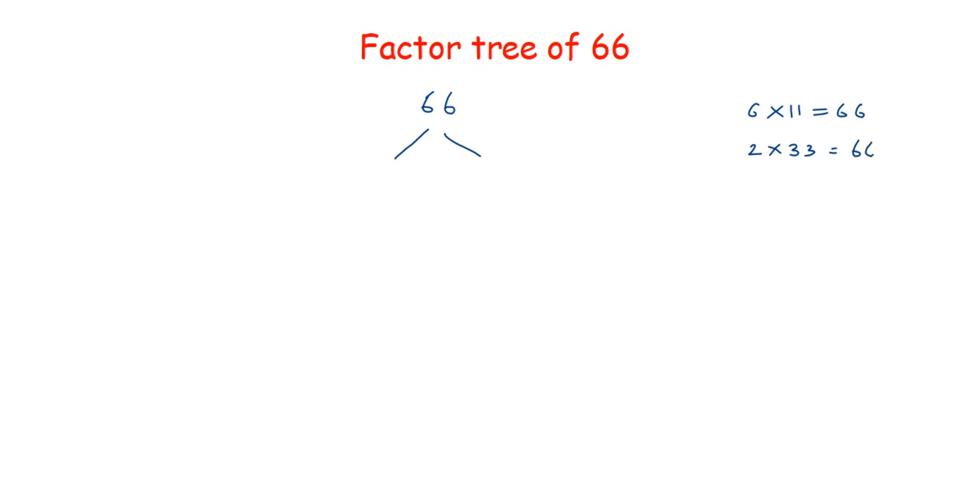So just think of a times table where you get 66. We have two options: 6 and 11, or 2 and 33. We can pick any one and we can split it. So here we'll take 6 and 11. So 6 times 11 is 66. So we'll write 6 here and 11 here.